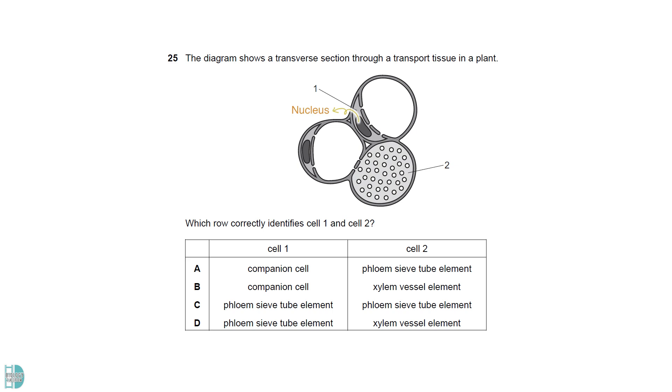Cell 1 has a nucleus. The clear space next to 1 is the lumen of the sieve tube element. Those gaps are the plasmodesmata. So, 1 is a companion cell that associates with a sieve tube element. A sieve tube element does not have a nucleus. 2 shows a perforated sieve plate. It is a feature of the phloem sieve tube element. Xylem vessel elements do not have any end walls.